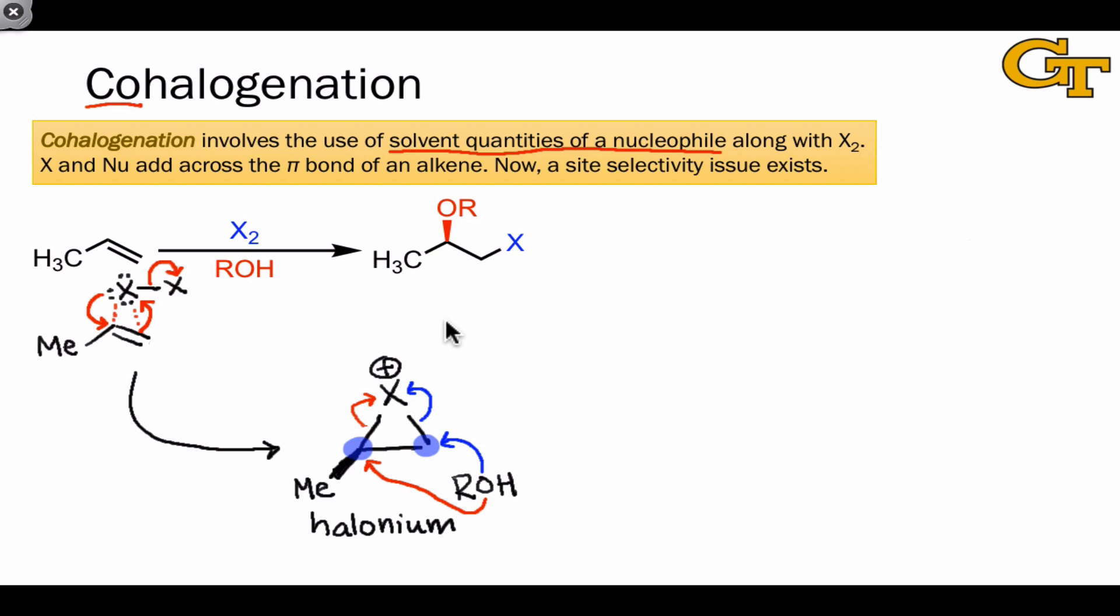Think back to our studies of the protonated epoxide, which is very similar to this case with OH+ replacing X+. In that case, we noted that because the more substituted position bears more partial positive charge than the less substituted position, it will react preferentially with the nucleophile. The exact same principle is in play here.